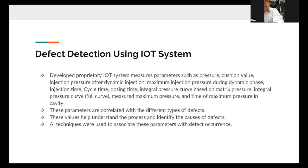This paper does not discuss how the parameters for our inputs were discovered. We are just discussing the AI engine. What was measured was injection pressure, cushion value, injection pressure after dynamic injection, maximum injection pressure during dynamic phase, injection time, cycle time, closing time, integral pressure curve based on matrix pressure, integral pressure curve full curve, measured maximum pressure, and time of maximum pressure in cavity.